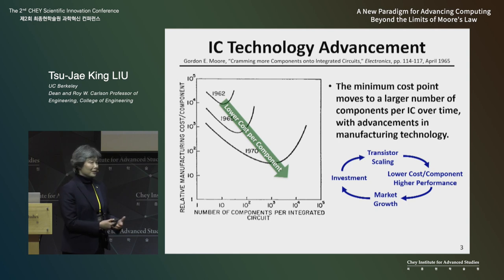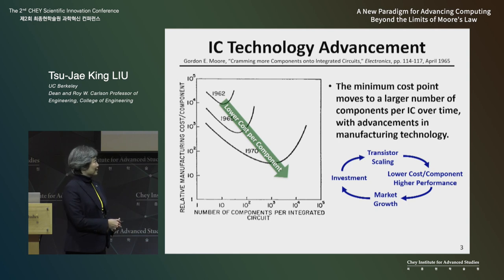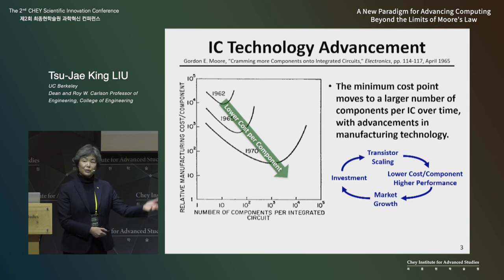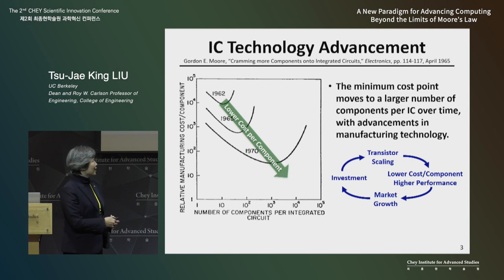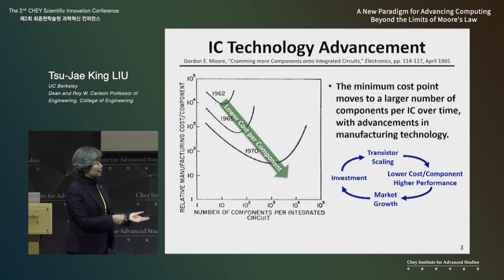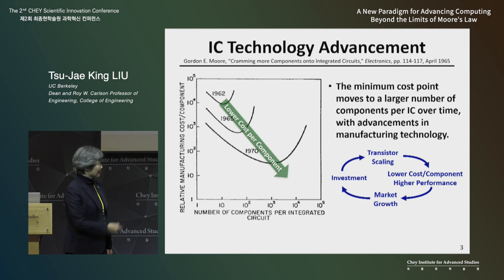And companies like SK Hynix can make a profit, then invest that profit into further advancing the technology to make it more precise, so that we can continue to increase more and more transistors on a chip.